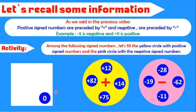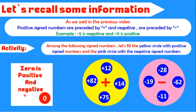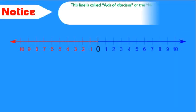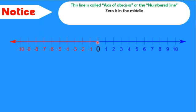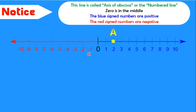Finally, the zero. Is zero positive or negative? Zero is positive and negative at the same time. Notice, this line is called axis of abscissa or numbered line. Zero is in the middle. The blue side numbers are positive and the red side numbers are negative.